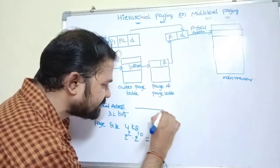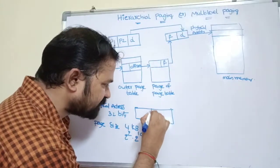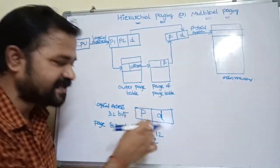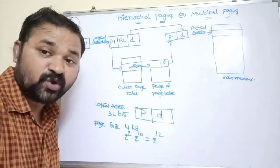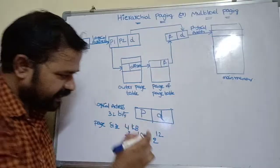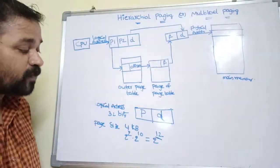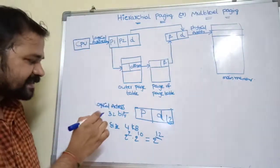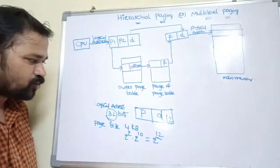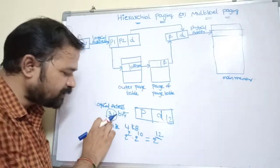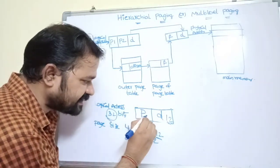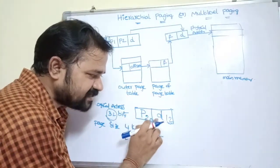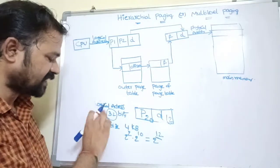The logical address is divided into two parts: the first part specifies the page number, and the second part specifies the offset or displacement. Since there are 2^12 locations in a page, the offset d = 12 bits. So the page number = 32 − 12 = 20 bits. Thus: 20-bit page number + 12-bit offset = 32-bit logical address.